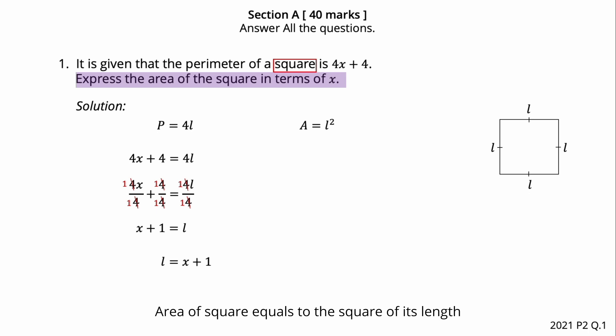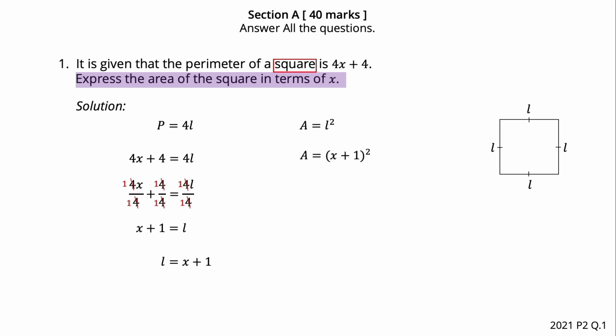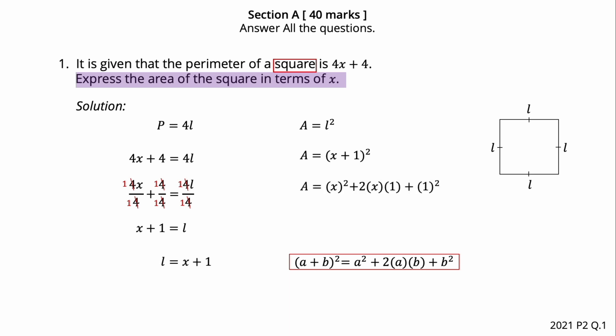The area of a square equals the square of its length. The length is x plus 1, so the area equals (x plus 1) squared. Using the formula (a plus b) squared equals a squared plus 2ab plus b squared, we get x squared plus 2 times x times 1 plus 1 squared, which equals x squared plus 2x plus 1.